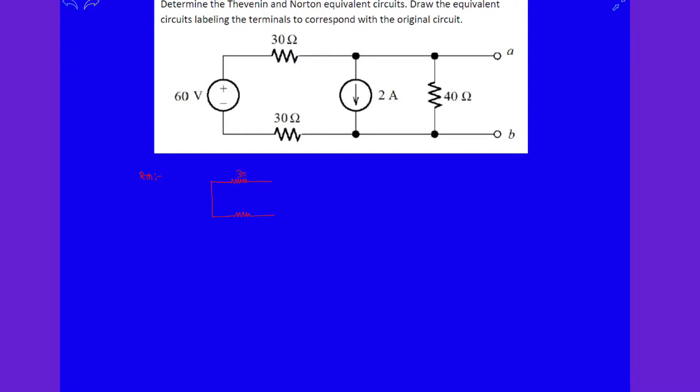This is 30 ohm resistance, this is 30 ohms resistance, and here it is 40 ohm resistance. The 2 amp source is open circuit, so the resistance looking into these two terminals is R_thevenin. Clearly these two 30 ohm resistances are in series and this entire combination is in parallel with the 40 ohms resistance.